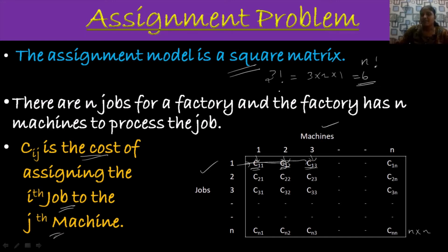If the number, or the order of the matrix is 4, if we have 4 by 4 matrix, so totally we have 4 factorial. 4 factorial is 24 totally. So totally we have 24 ways for making assignments.